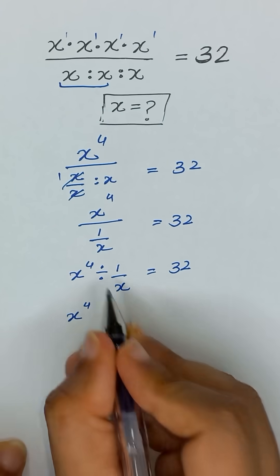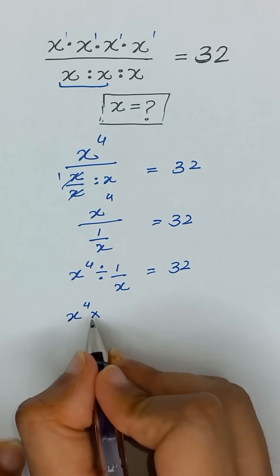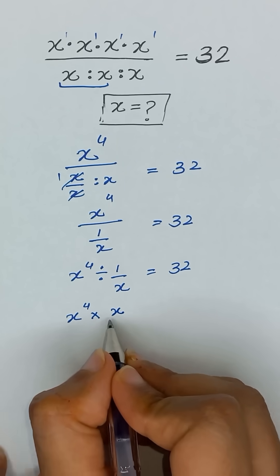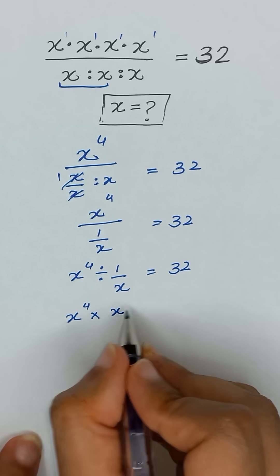Now we change divide into multiply and take the reciprocal of the next fraction, which is 1 divided by x, so it becomes x divided by 1, which we can write as x.